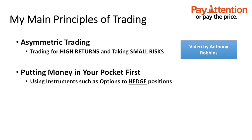The second principle is putting money in your pocket first. What I like to do when I trade is sell instruments called options. After you trade, you put money in your pocket first, and the money you get by selling options actually hedges against losses as you hold that position until it goes in your favor. It's very hard to time the market — probably a waste of time — and you're going to get very stressed. So let's watch the video by Tony Robbins now.